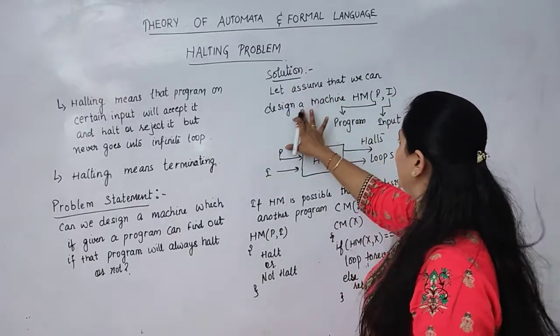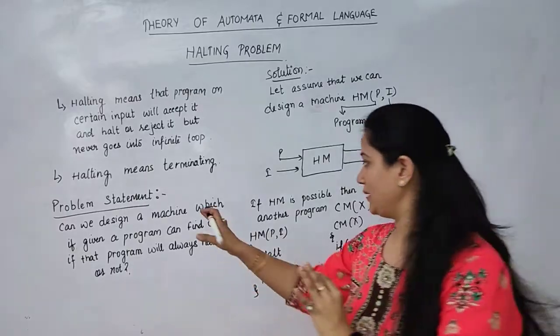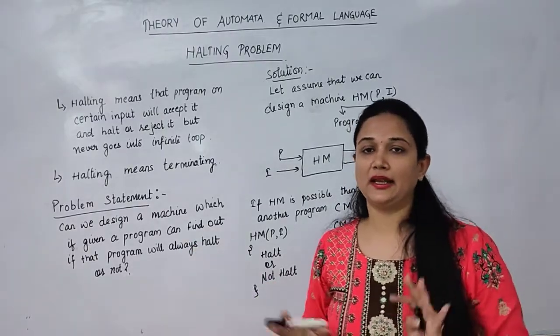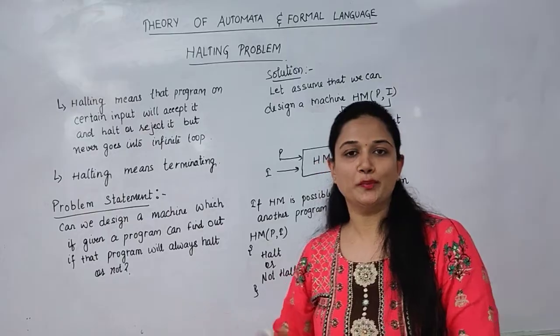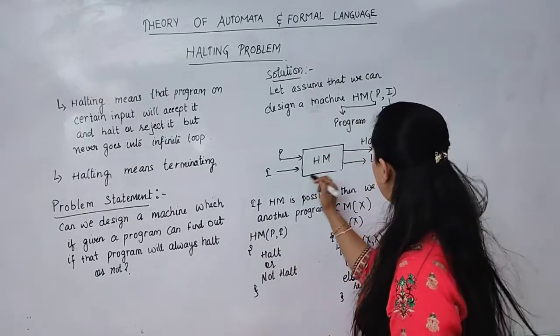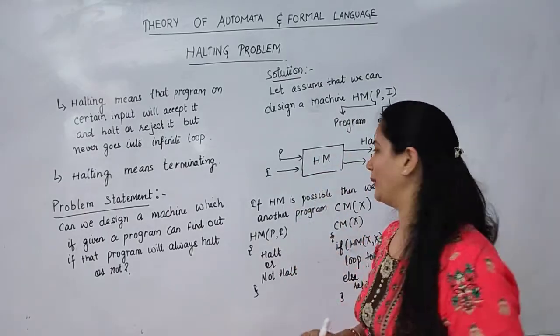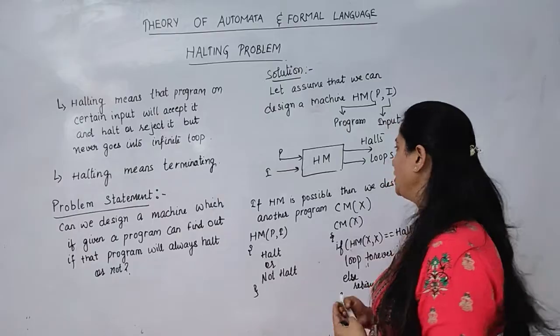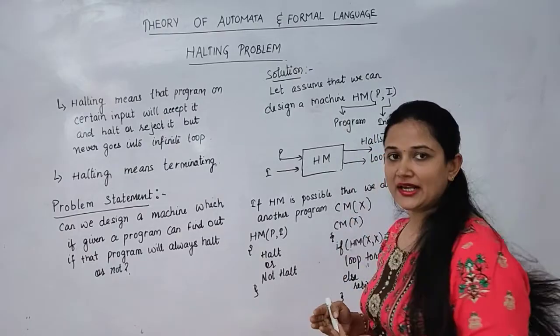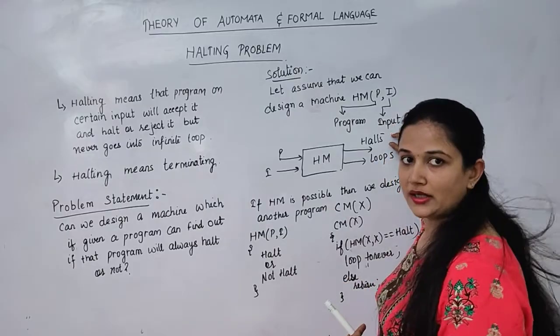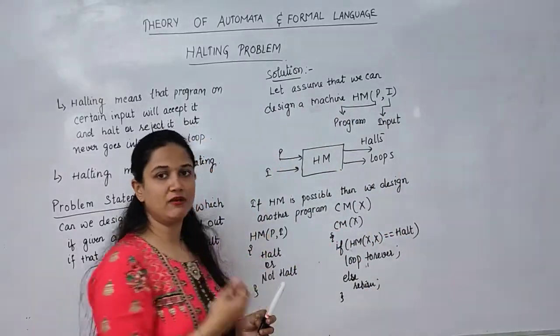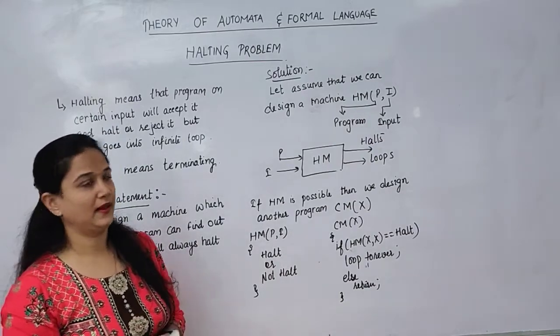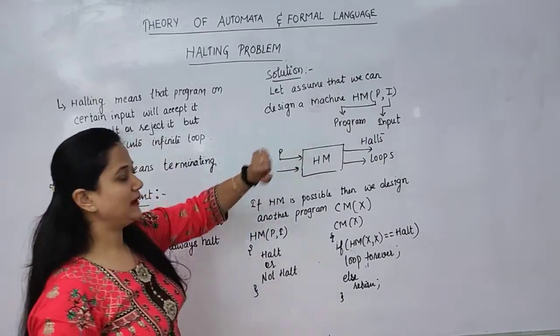Let's assume that we can design a machine by which we can tell for any Turing machine with given input whether it will halt or enter a loop. So let's suppose this is my halting machine for the halting problem. This is a program and input, both are given as input. And in output what we are getting is that either the system will halt or it will enter into a loop. Either it will finish, terminate properly, or it will enter into an infinite loop. Now this machine is ready.